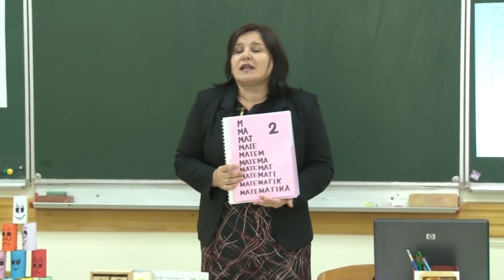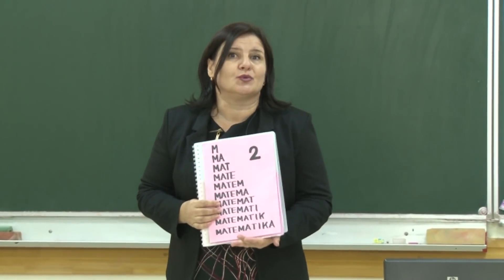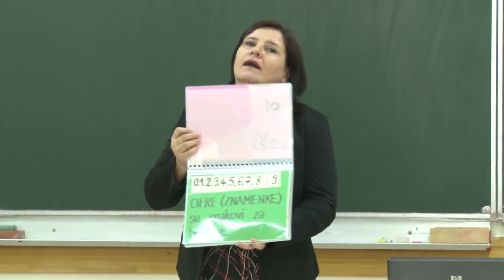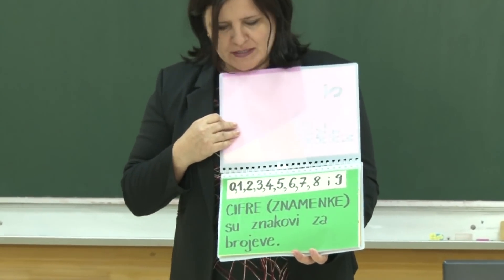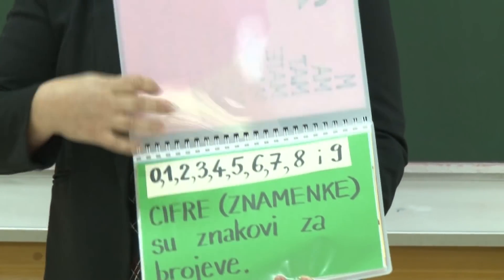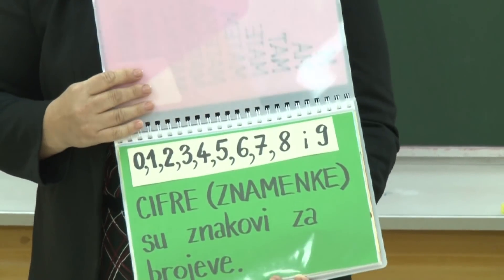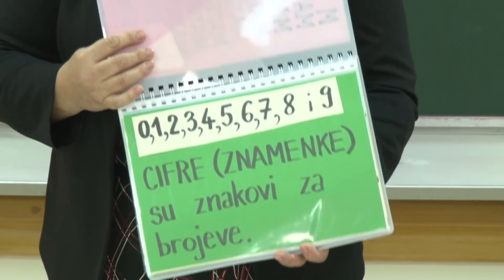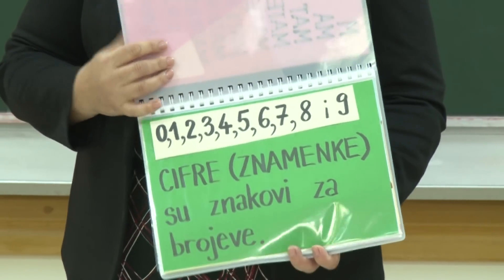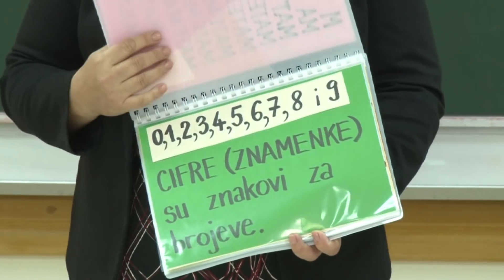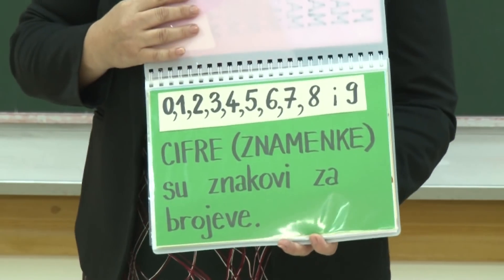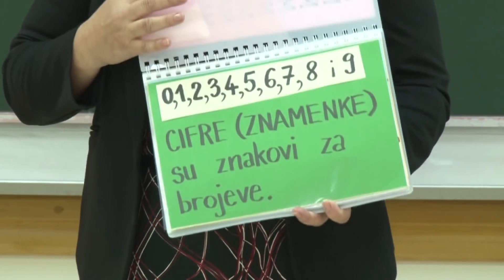Najvažniji gradivo, nastavni sadržaji koje smo radili u drugom razredu iz matematike. Cijele se šta sam vam prošli puta rekla: i u matematici, i u bosanskom, hrvatskom, srpskom jeziku i književnosti, i u mojoj okolini imamo neke znakove. Čak i u muzičkom imamo neke znakove — to su note koje ćemo učiti u starijim razredima. U matematici su ovo ti glavni znakovi — brojevi, cifre.